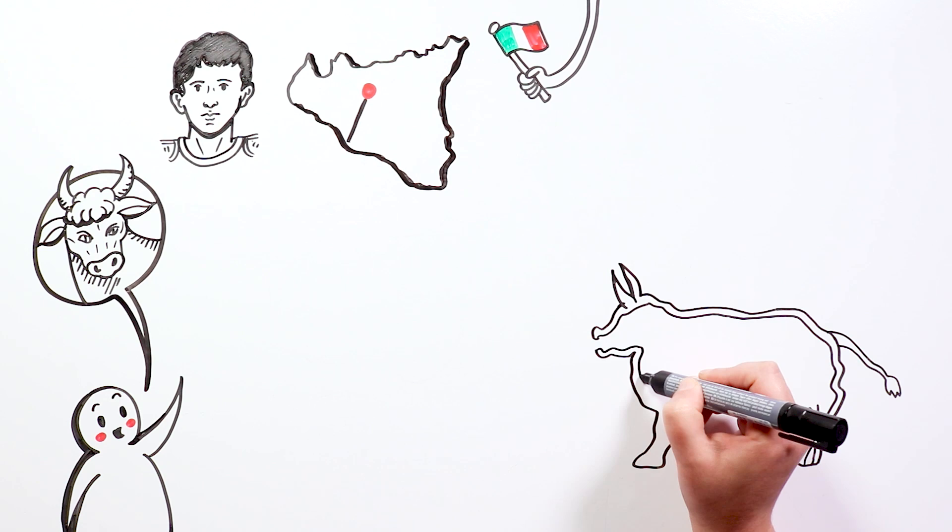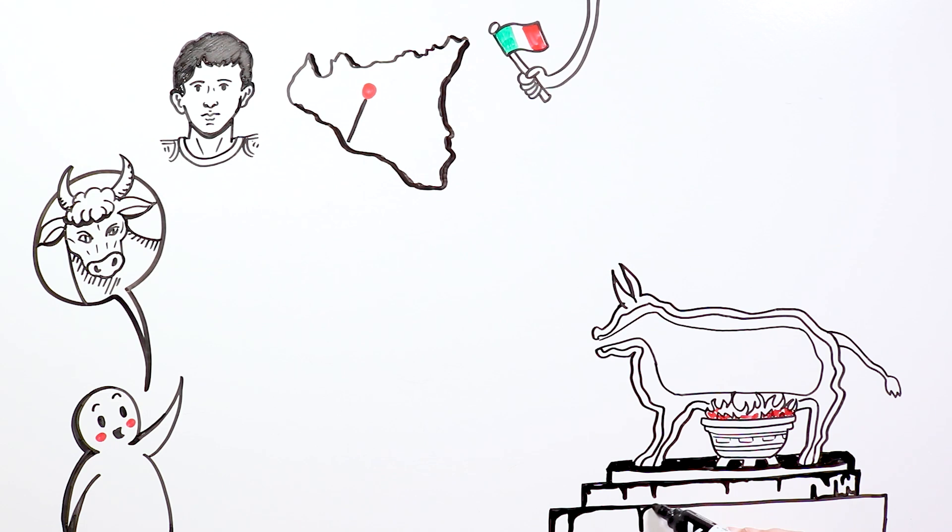The victims were introduced inside a bronze statue in the shape of a bull which was hollow inside. This sculpture was placed on top of a bonfire, causing the temperature inside to rise enormously, turning it into an oven.